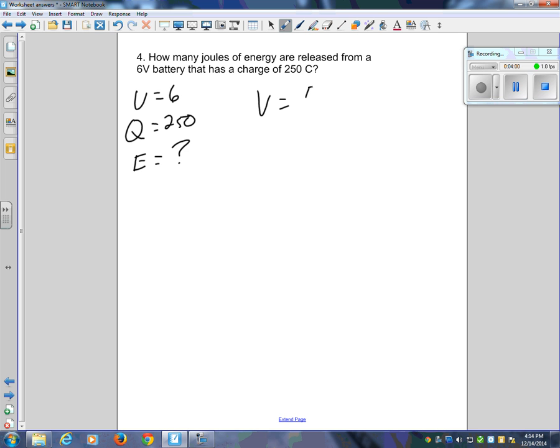V equals E over Q. We are solving for E, the formula for E is Q times V, 250 times 6 equals 1,500 joules of energy.